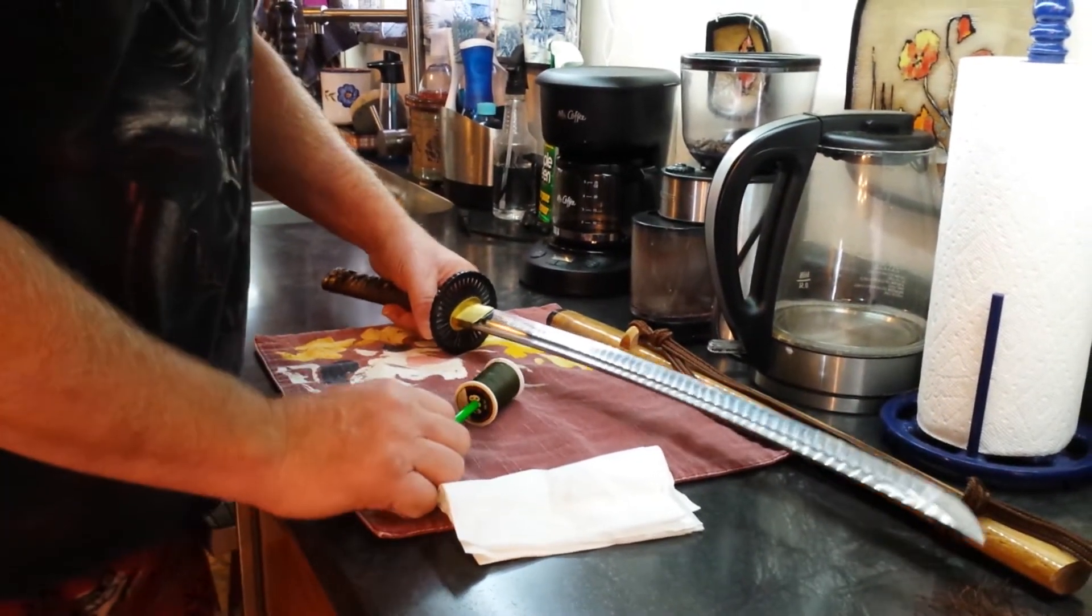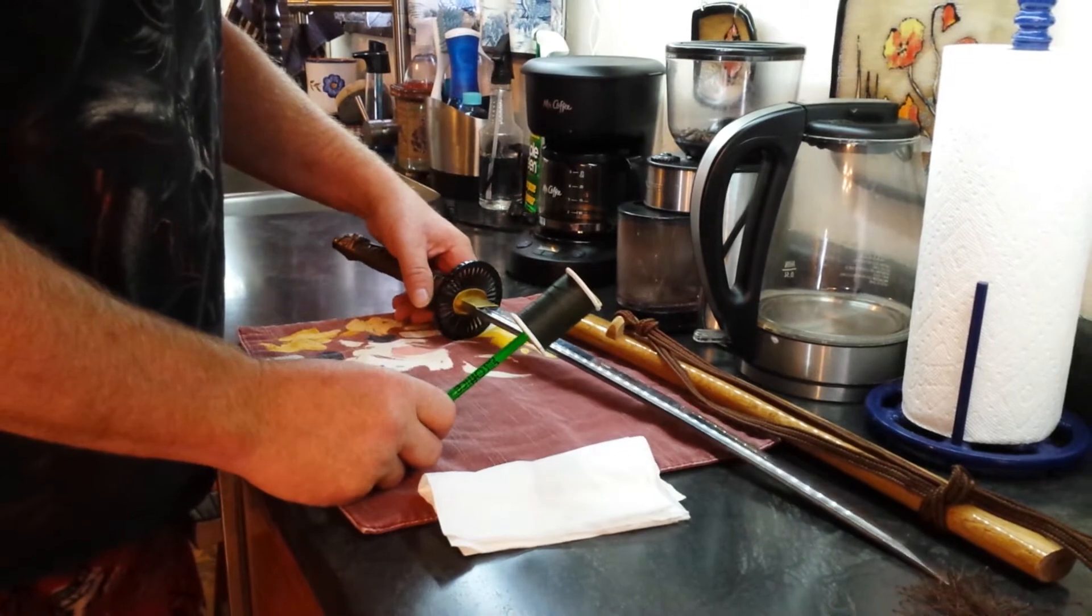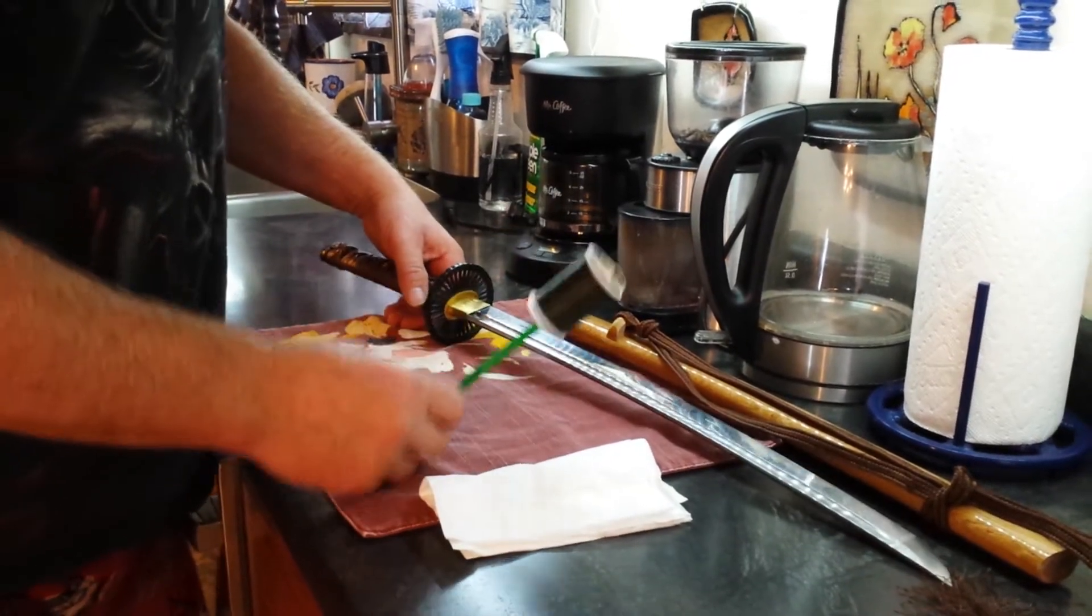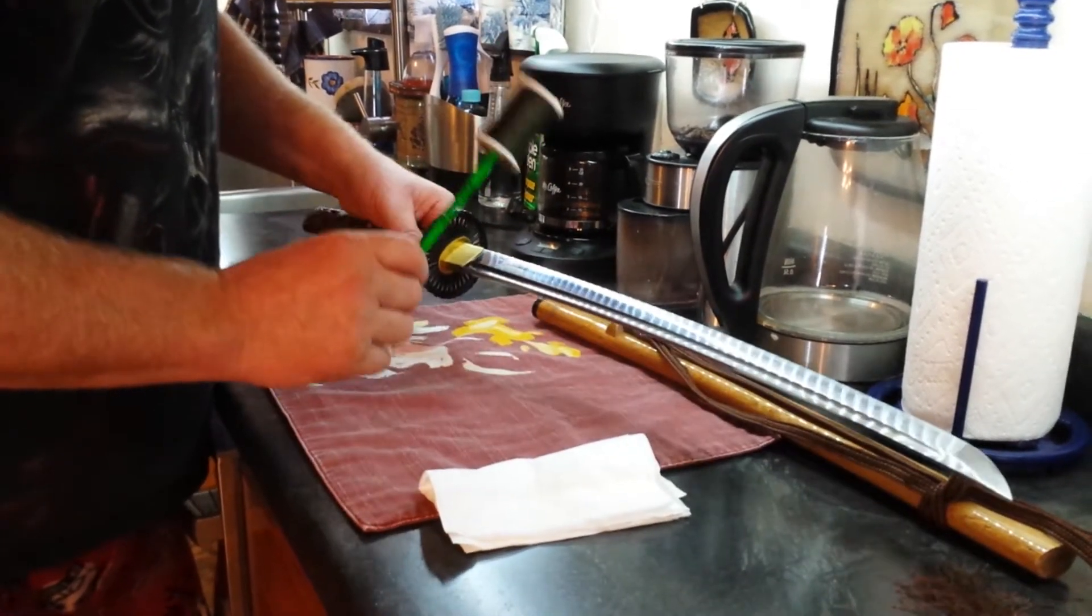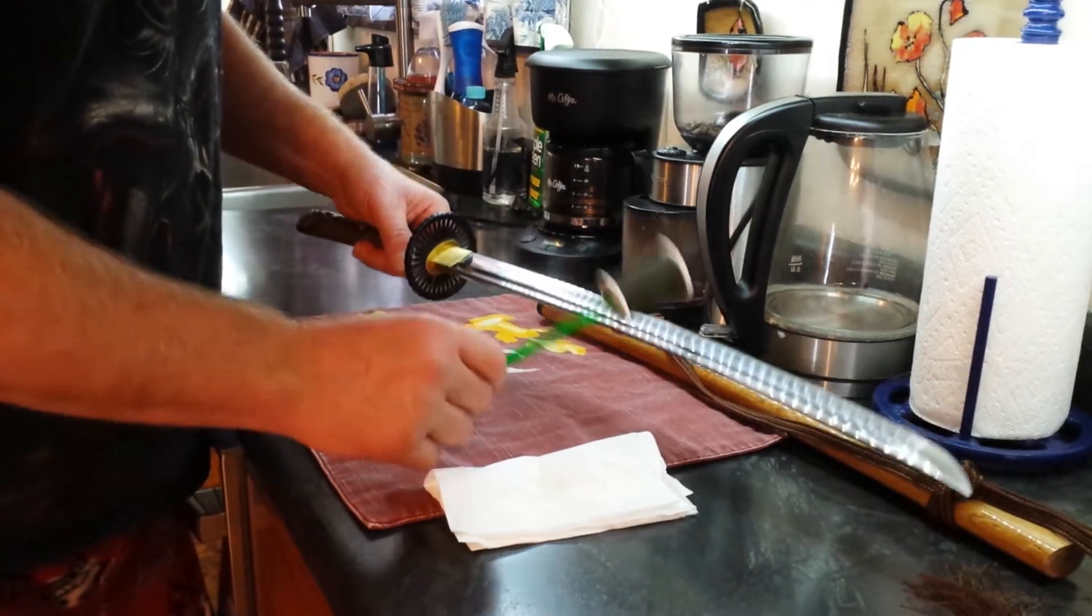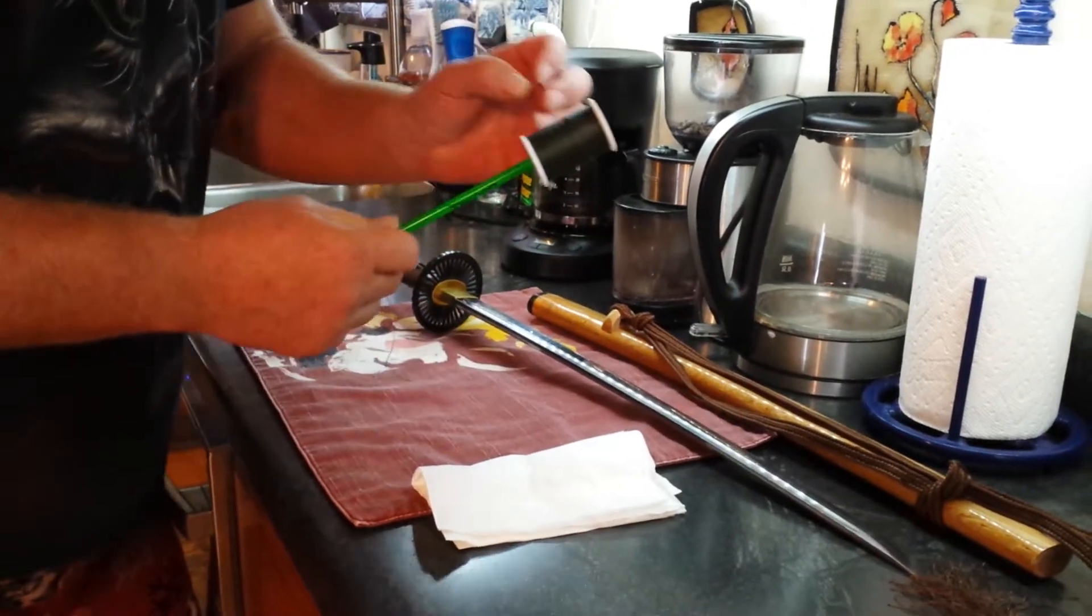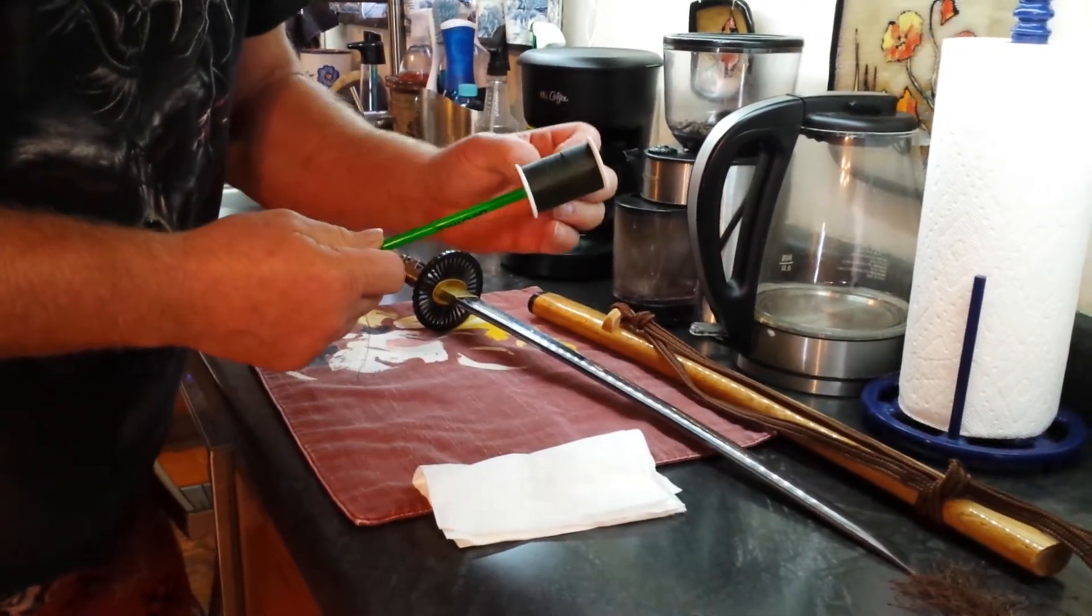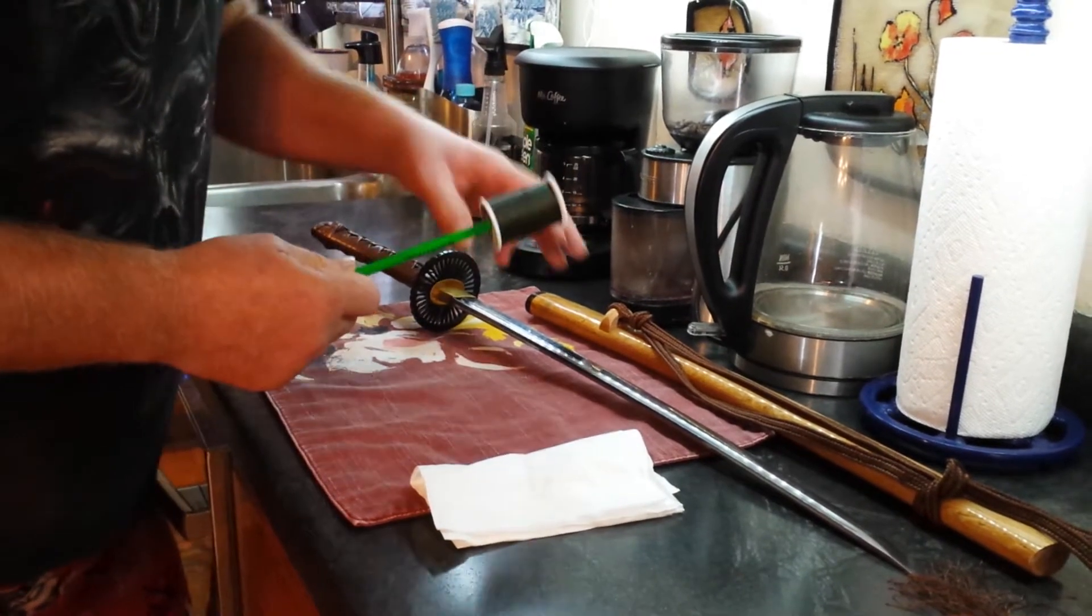The problem, I've been told, with doing that is it damages the sword. Now the first reason it damages the sword is when you tap the powder ball, what you're really doing is knocking out larger and larger particles of this dust onto your sword.